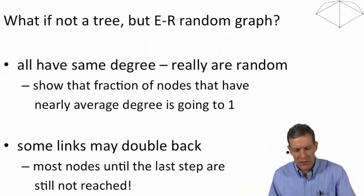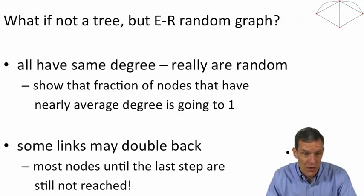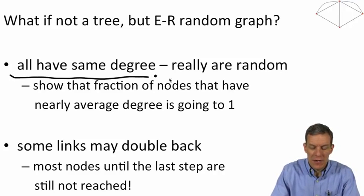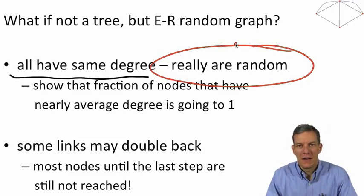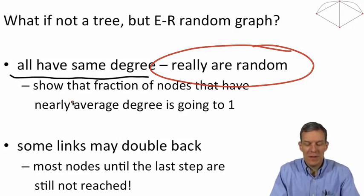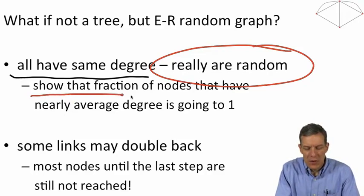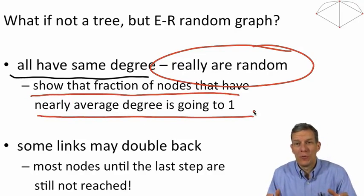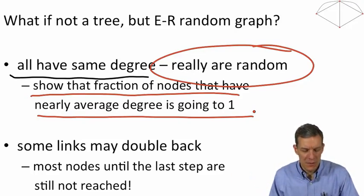And in terms of details, what if this was not a tree but actually an Erdős-Rényi random graph? Why is it going to come out to be a similar number here? So here, what we have is all have the same degree. Really, in reality, they're random. And so part of the difficulty is that not everybody is going to have the same degree. Well, part of the proof that the Erdős-Rényi random graph has the same diameter as what we just went through is going to be that the fraction of nodes that have nearly the average degree is going to be close to one in a large network.